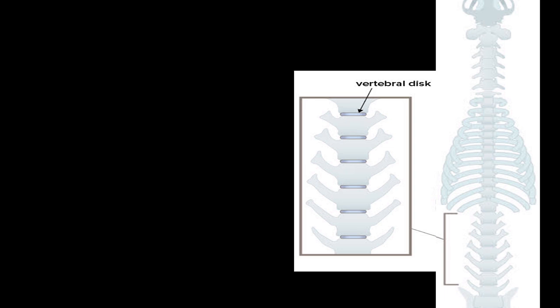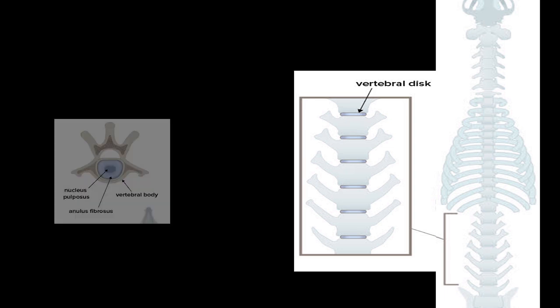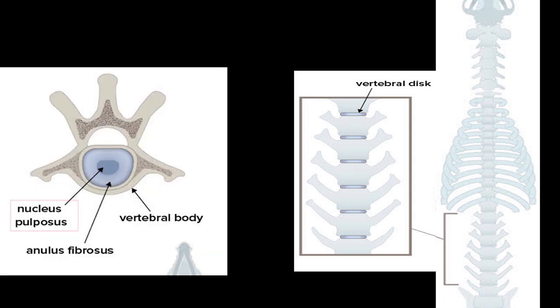The annulus fibrosis is a tough circular exterior of the intervertebral disc that basically protects the inner soft core. This inner soft core is called nucleus pulposus, which provides cushioning. The outer tough structure is annulus fibrosis.